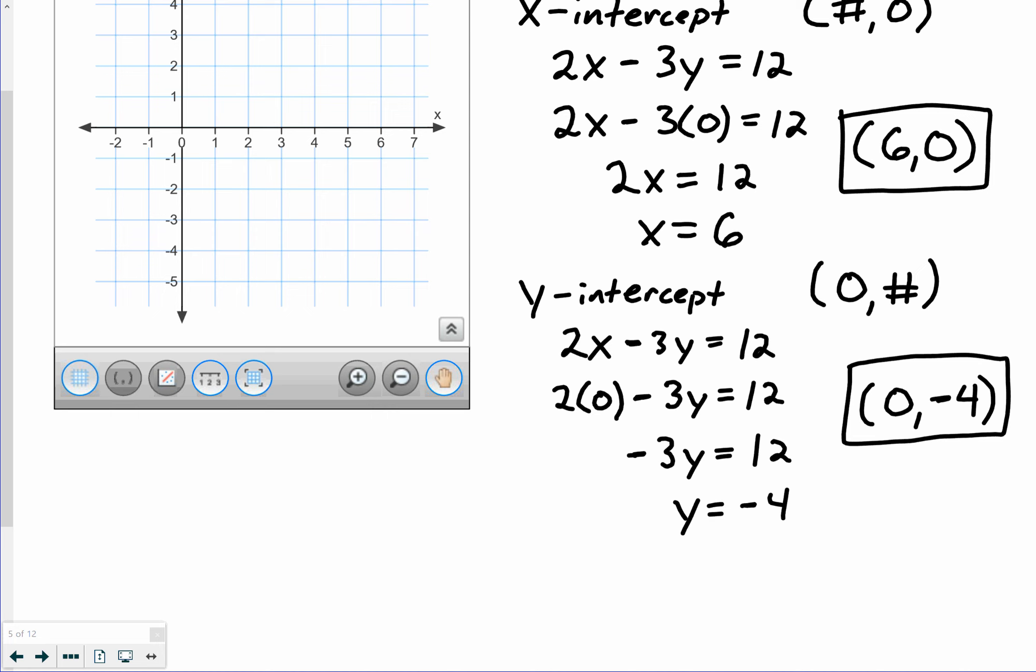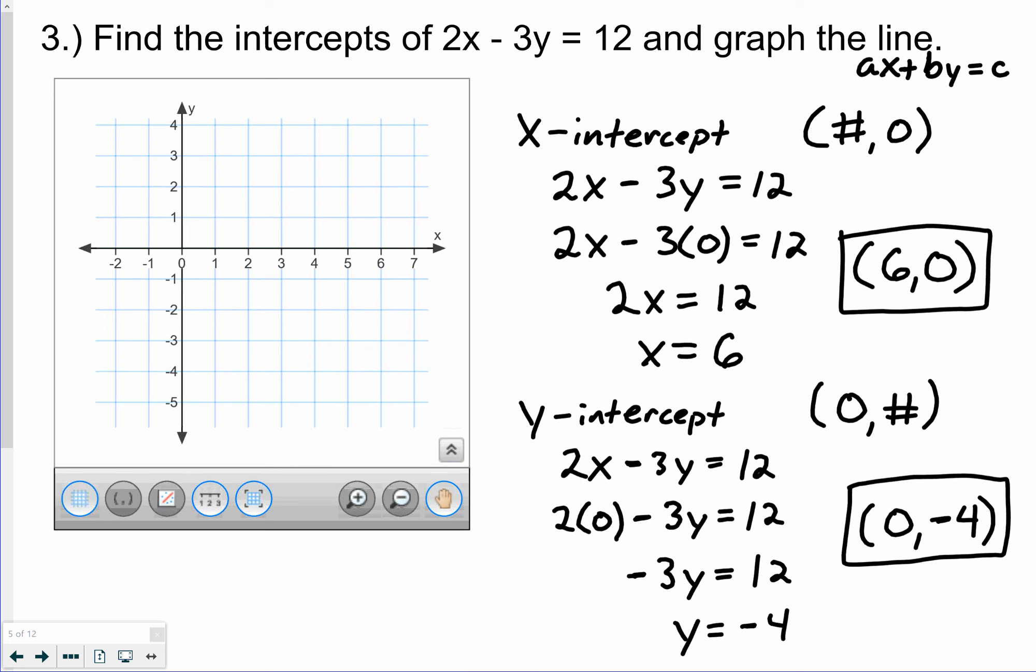Okay? Now, from this point, if you have both intercepts, you have enough to graph the line. If you have two points on a line, you've got enough. So I'm going to go back to the grid and plot my two intercepts. So my x-intercept is 6, 0. Here's that point over here. That's 6, 0. You'll notice the x-intercept is on the x-axis. And the y-intercept is 0, negative 4 on the y-axis. And then you can make your line. And just do your best. I recognize you don't have a ruler.